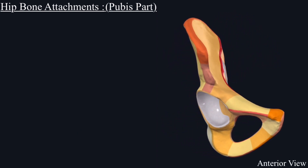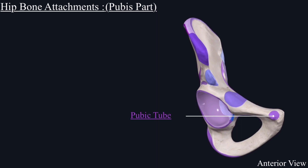Also note that on the body of pubis is present a tubercle called the pubic tubercle. Keeping these landmarks in mind will help us better understand the muscles' origin and insertion on the pubis part.